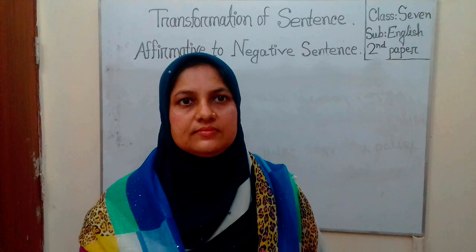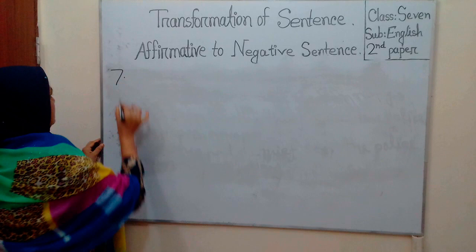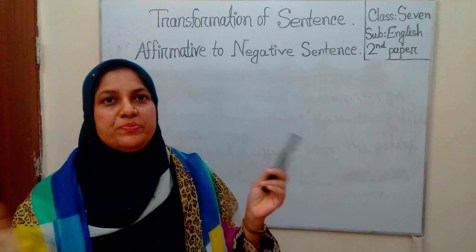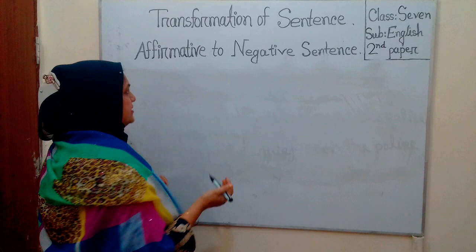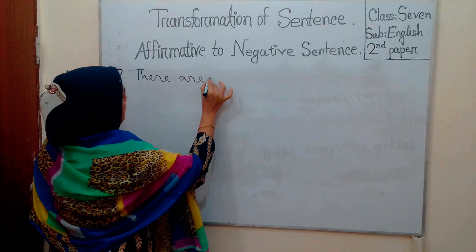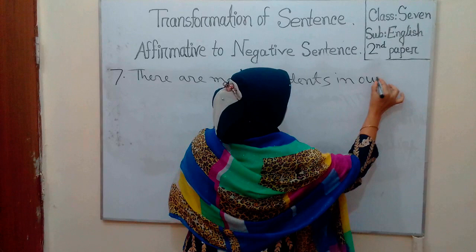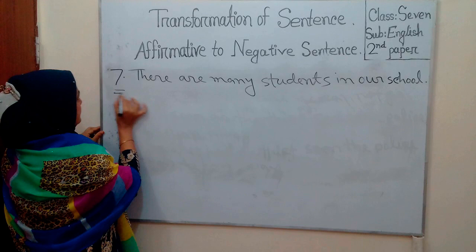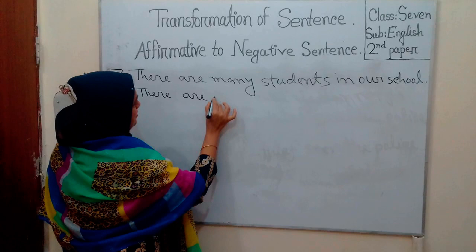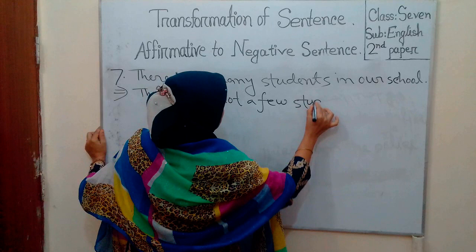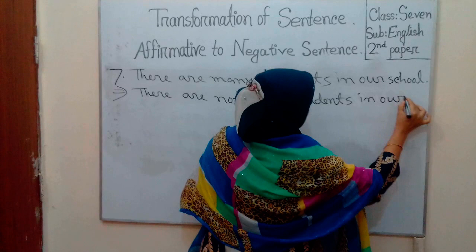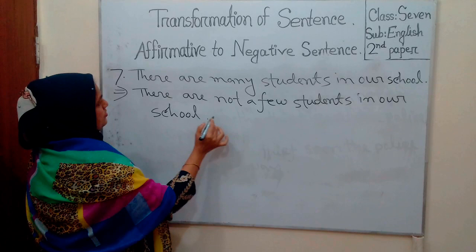Rule 7. If there is 'many' in the affirmative sentence, it should be changed into a negative sentence using 'not a few'. For example: 'There are many students in our school.' Negative sentence: 'There are not a few students in our school.' So 'many' becomes 'not a few'.